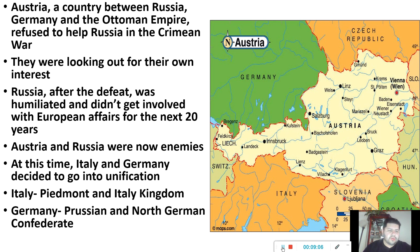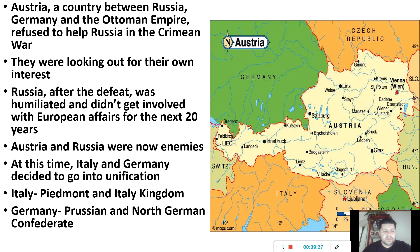After Russia was defeated, they were humiliated — they just couldn't believe they had lost. They basically kept to themselves and didn't bother with European problems for the next 20 years. Austria and Russia were now enemies; Austria lost their one reliable friend and was on their own. At this time, countries were starting to feel like they needed to unite — instead of being little independent states, they needed to be one united country. Two countries did this: Italy and Germany.